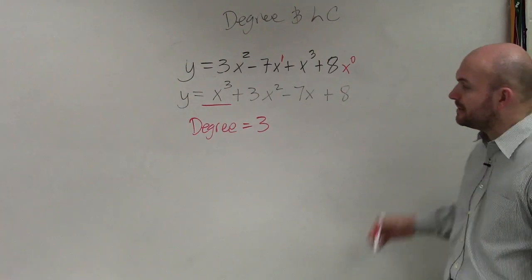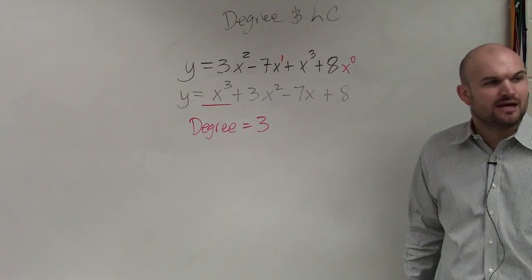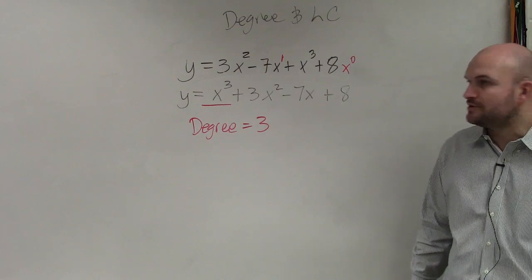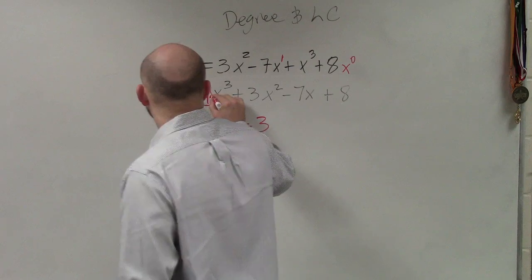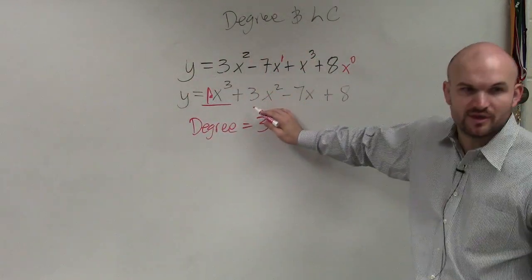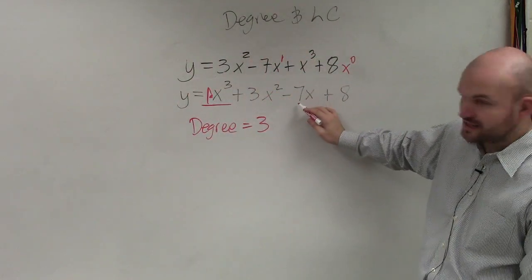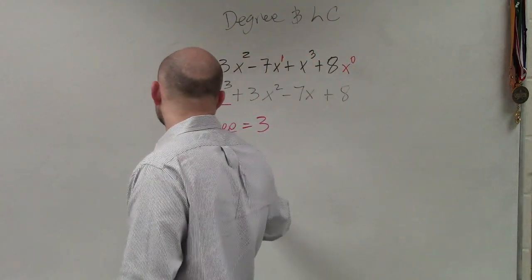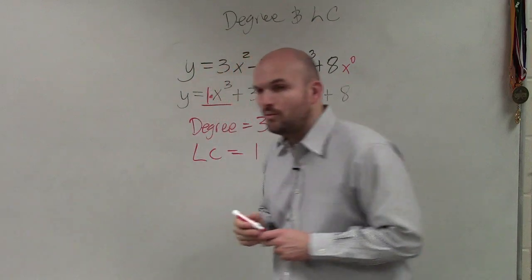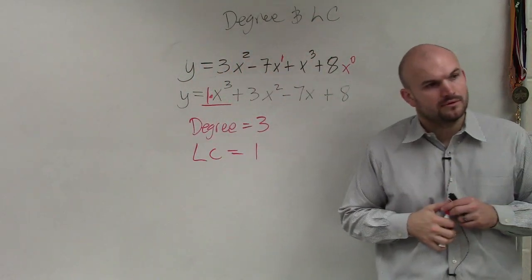And now the last thing we need to do is determine our coefficient. So what is the number that's being multiplied by x to the third? It's the number in front. It's one. Just like if it was this one, then you'd say it was three. That one, you'd say negative seven. Here, it's not so obvious that there's a one in front, but we've got to remember that the leading coefficient is equal to one.